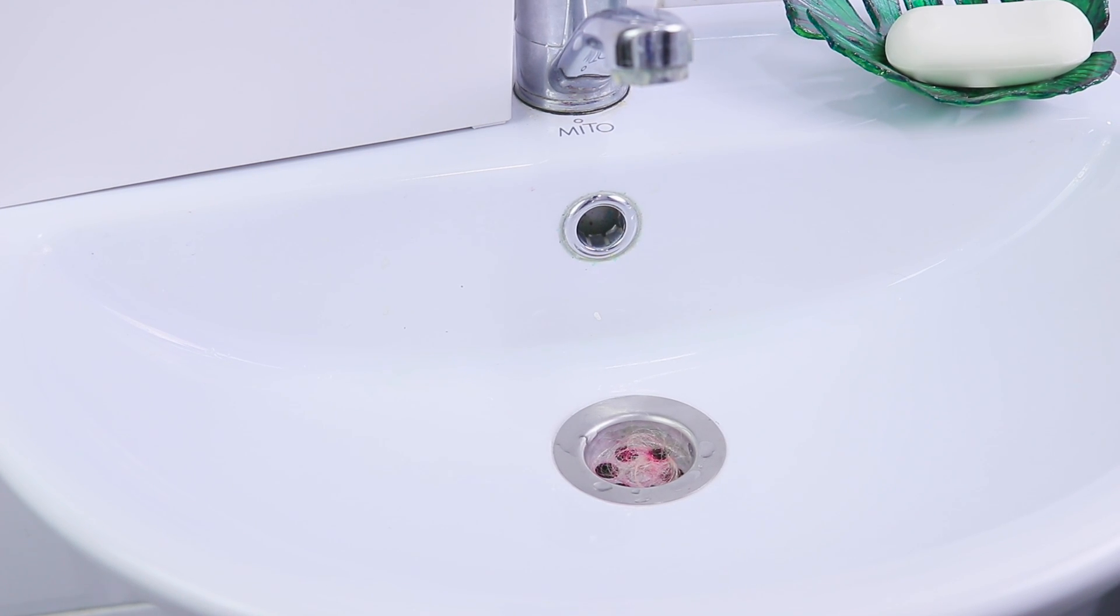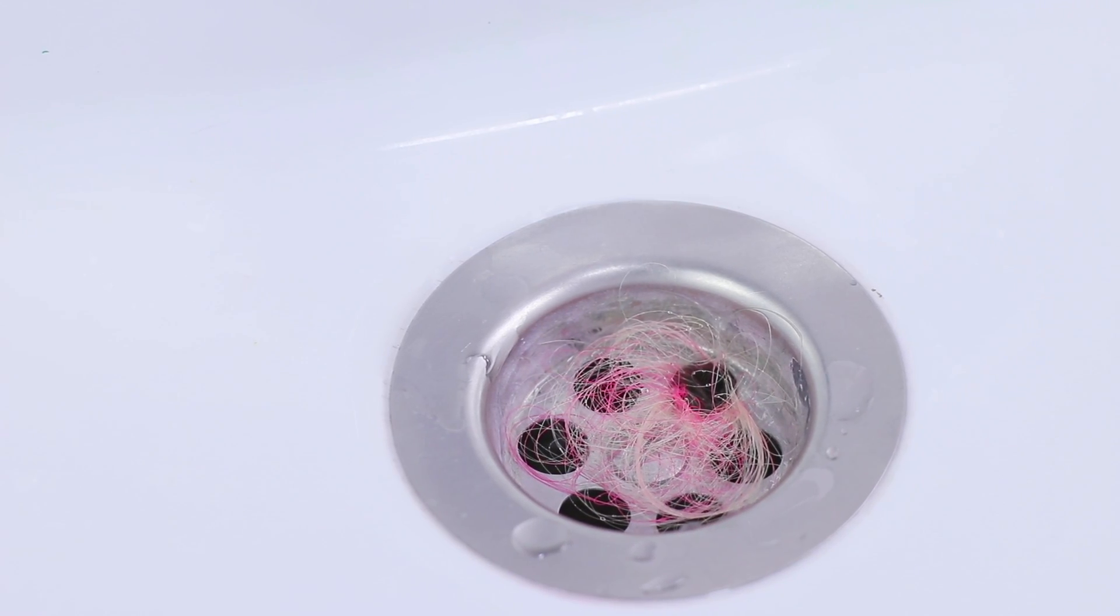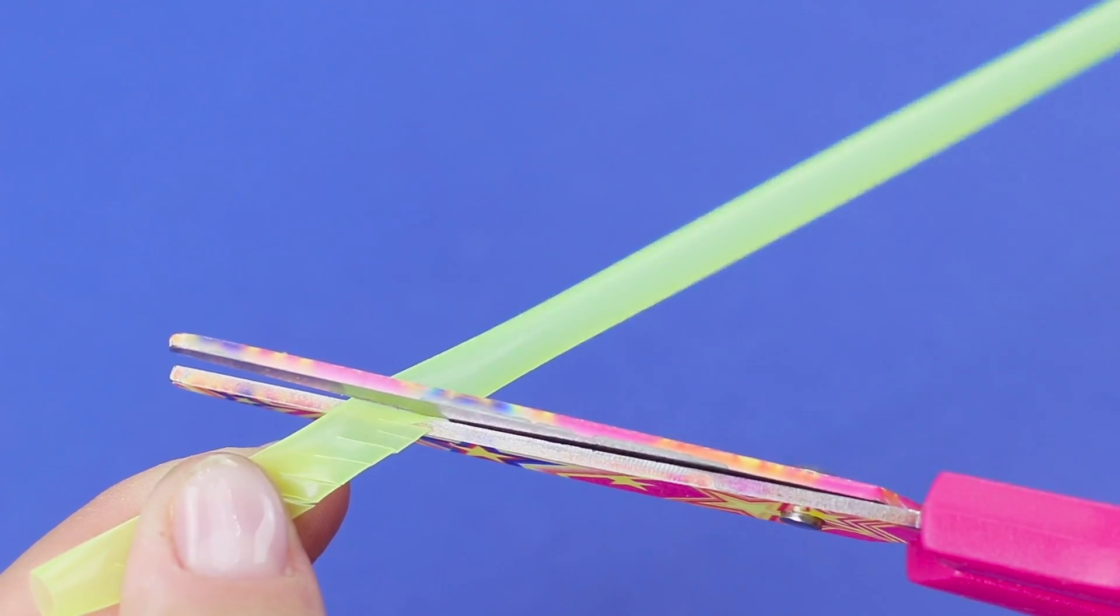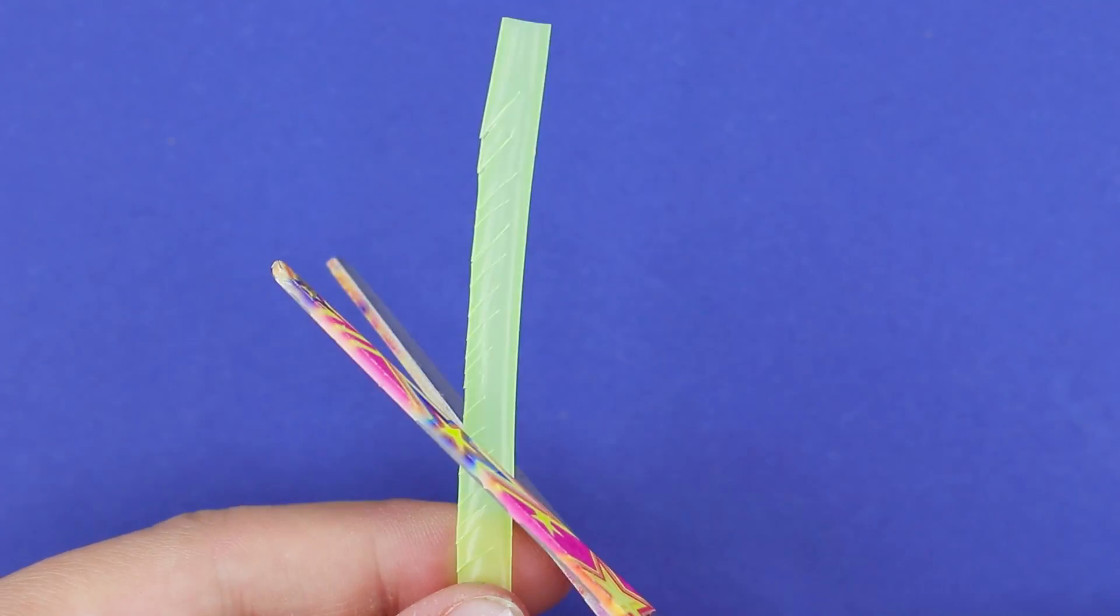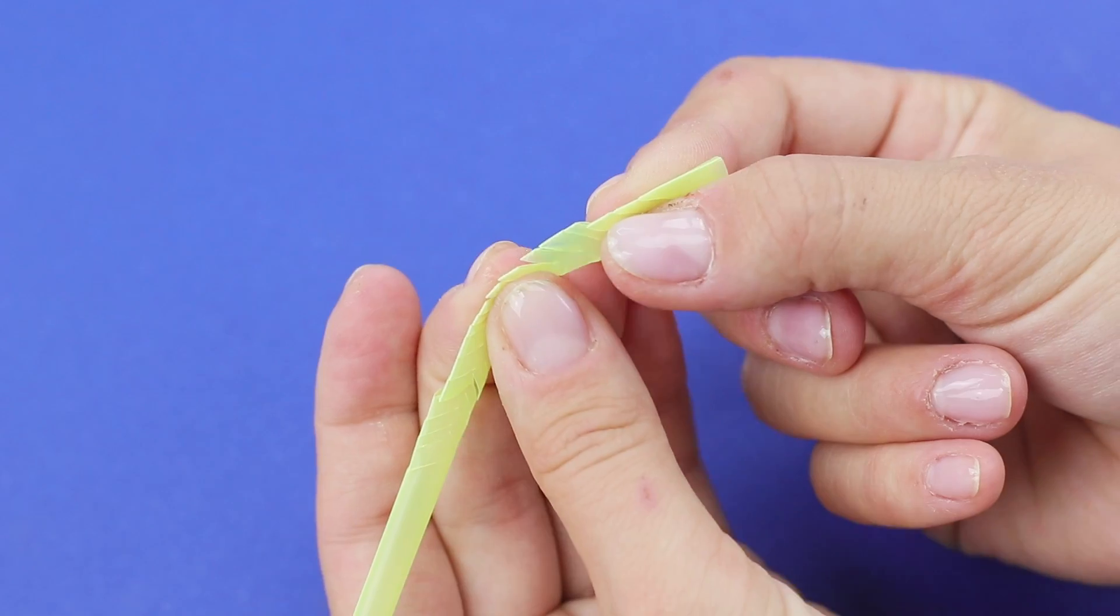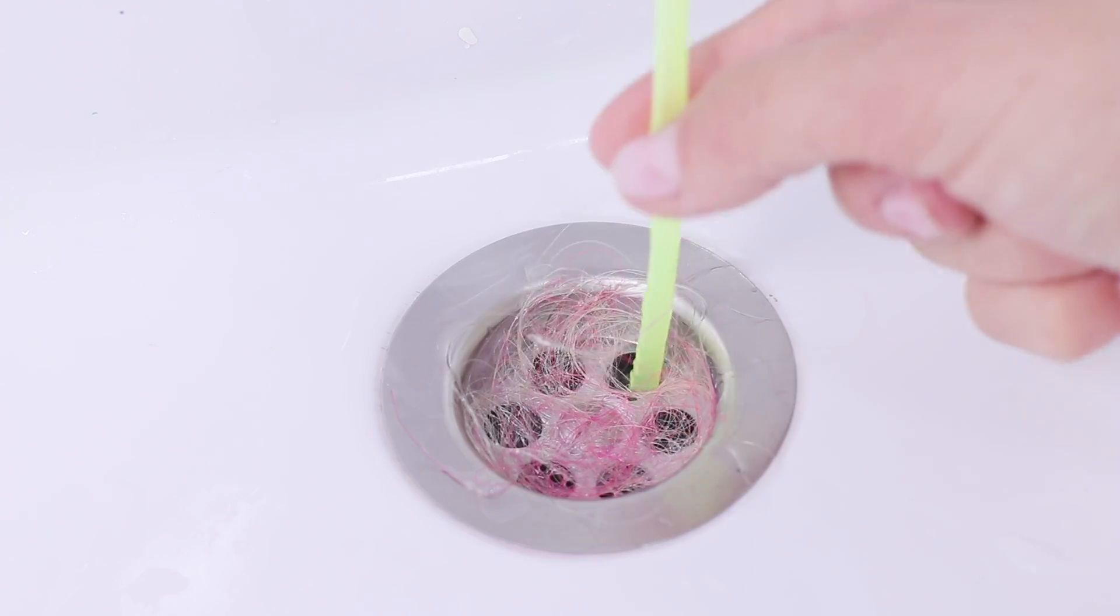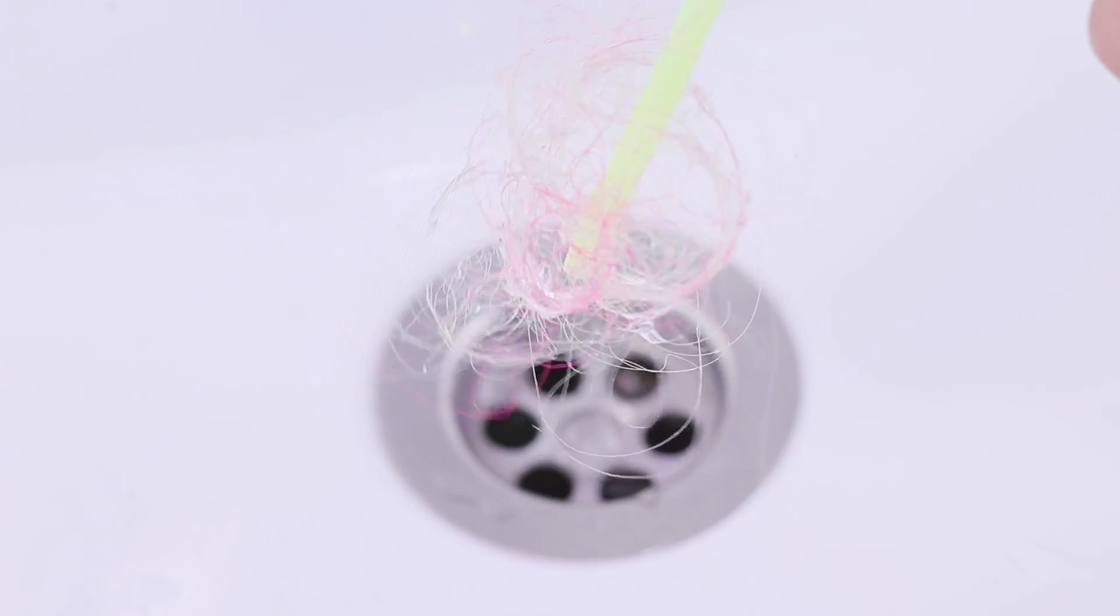Oh no! Hair again! The sink is clogged! An ordinary straw will help! Actually, three straws! Cut a straw at an angle. Now do the same from the other side. You should get a shape like this. Insert the straw in the sink drain and collect all the hair. Now everything is clean!